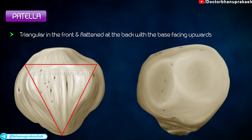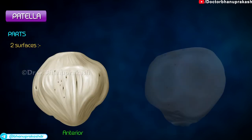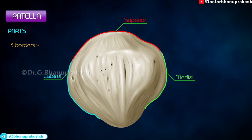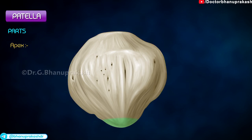It is triangular in the front and flattened at the back, with the base facing upwards. Parts: It has two surfaces, anterior and posterior. Three borders: superior, medial and lateral. It also has an apex.